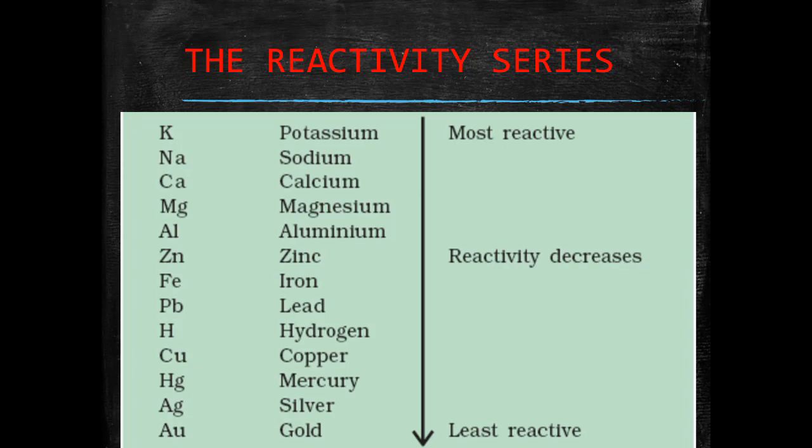The metals that are placed above hydrogen are called active metals, for example, potassium, sodium, calcium, etc. The metals that are placed below hydrogen are called inactive metals or less reactive metals, for example, noble metals like gold and platinum.